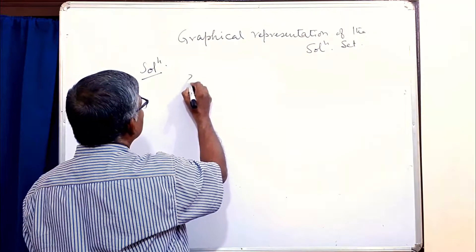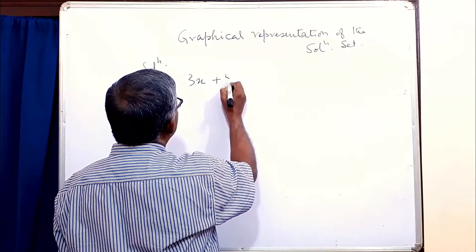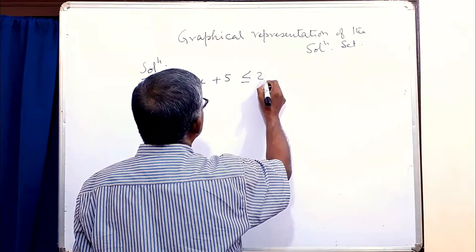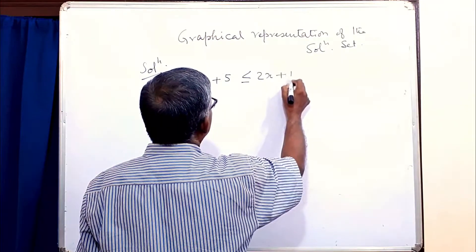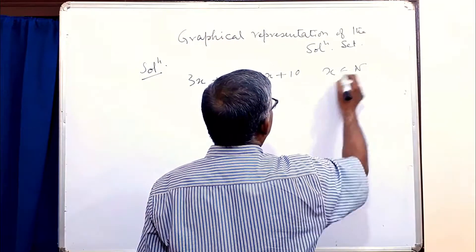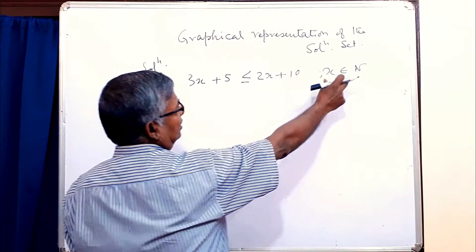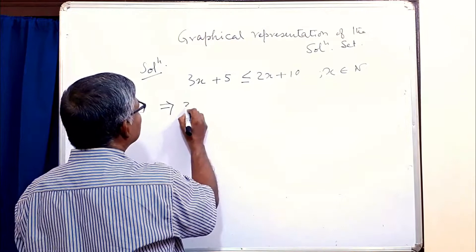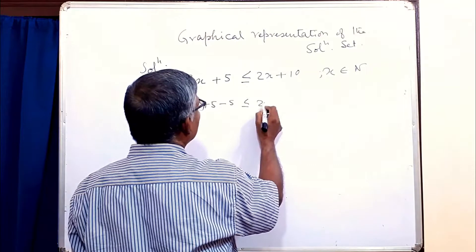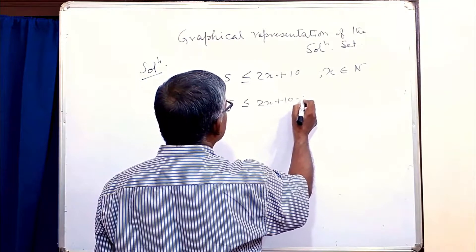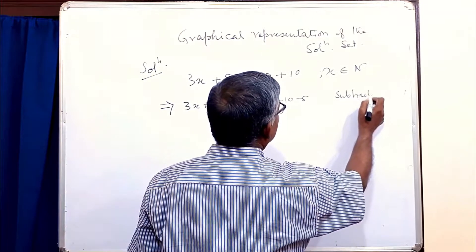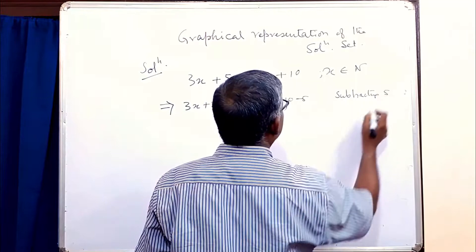Suppose 3x plus 5 is less than or equal to 2x plus 10, where x belongs to N, that is x is a natural number. This implies that 3x plus 5 minus 5 is less than or equal to 2x plus 10 minus 5, subtracting 5 from both sides.